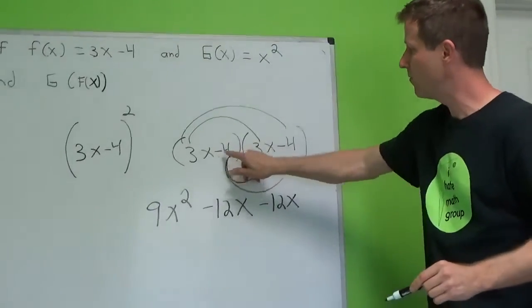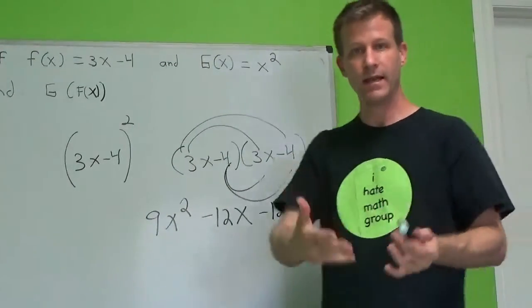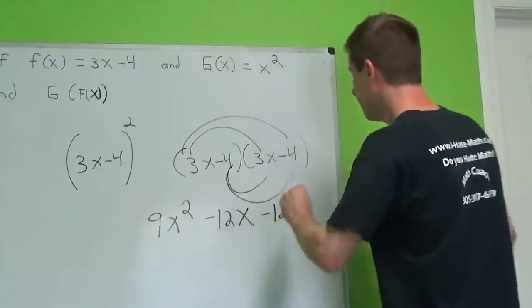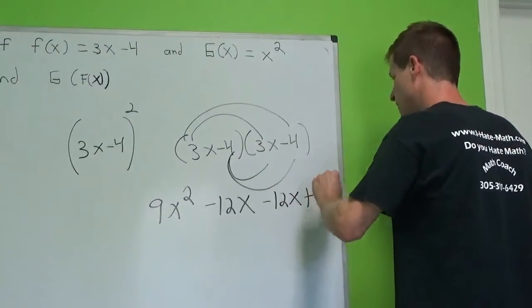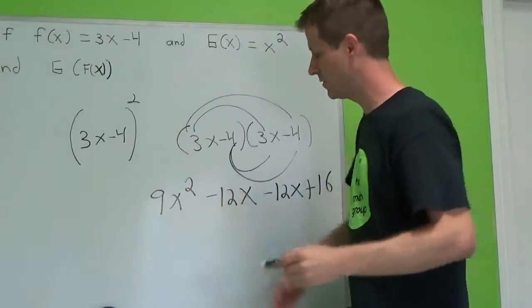And then we have a negative 4, negative 4 when you multiply. Negative negative is what? Positive. Positive 16. Can we combine like terms? Absolutely. What do we combine?